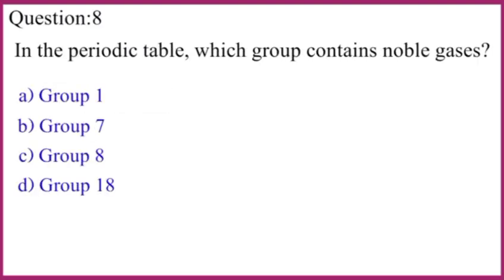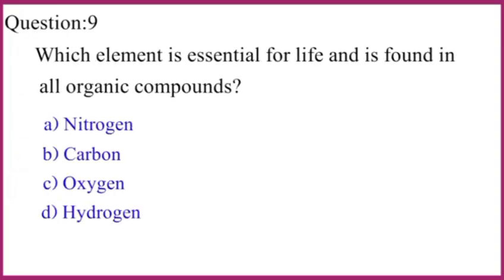In the periodic table, which group contains noble gases? Noble gases have zero valency and belong to group 18, also called the zero group. Which element is essential for life and found in all organic compounds? The correct answer is carbon.